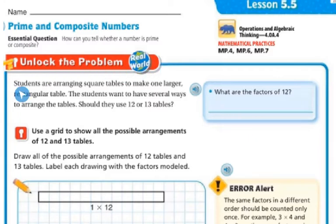Let's unlock the problem. Students are arranging square tables to make one larger rectangular table. The student wants to have several ways to arrange the tables. Should they use 12 or 13 tables?